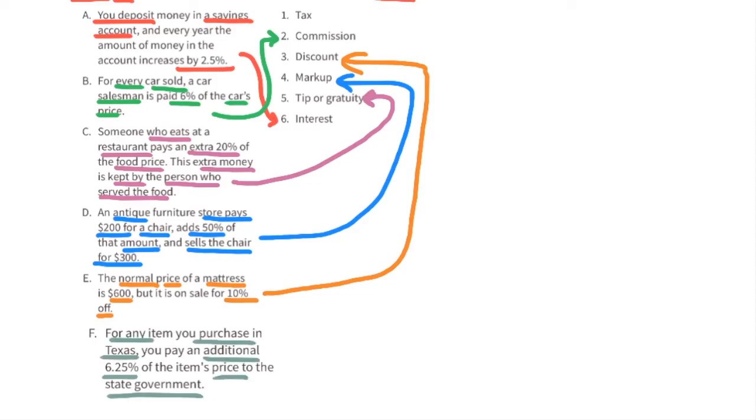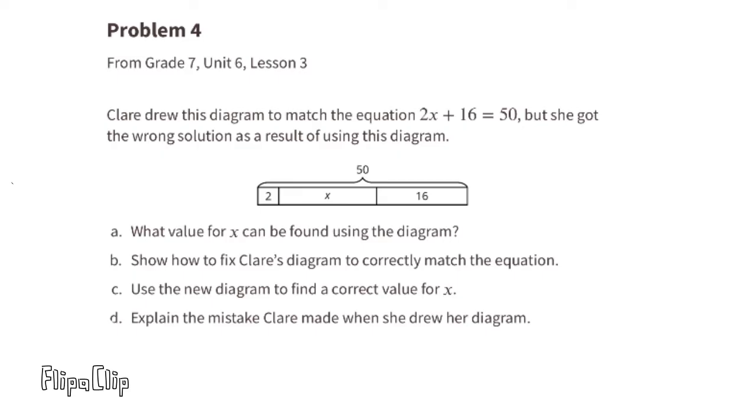F: For any item you purchase in Texas, you pay an additional 6.25% of the item's price to the state government. This situation represents tax. Problem number four, from seventh grade Unit 6, Lesson 3: Clare drew this diagram to match the equation 2x + 16 = 50, but she got the wrong solution as a result of using this diagram.